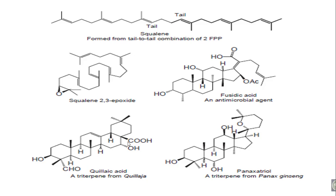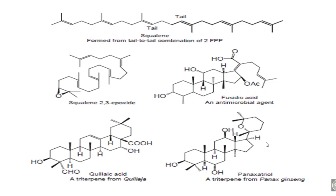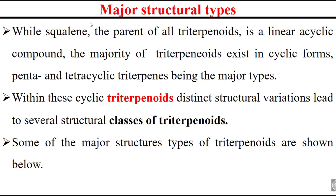Quialic acid is a triterpene from Chlyangia plants, and panaxatriol is a triterpene from Panax ginseng. Squalene is the parent of all triterpenoids and is a linear acyclic compound, while the majority of triterpenoids exist in cyclic forms — penta- and tetracyclic triterpenes being the major types. This unique structural variation leads to several structural classes of triterpenoids.